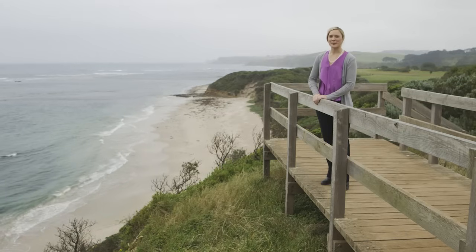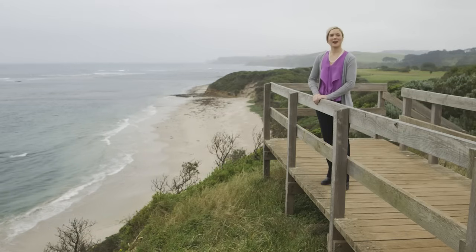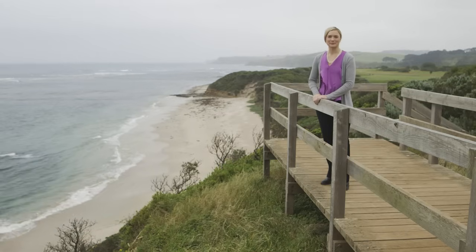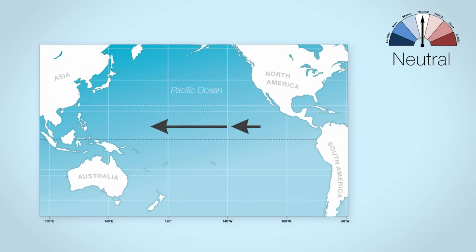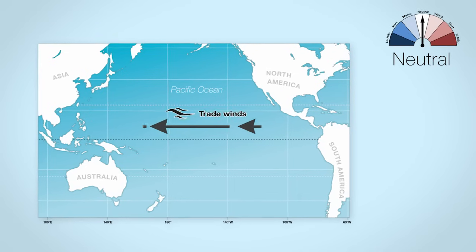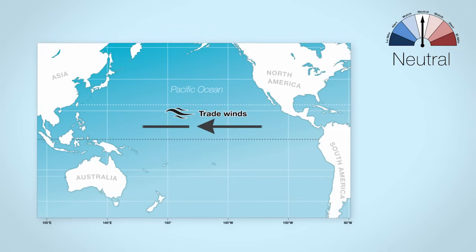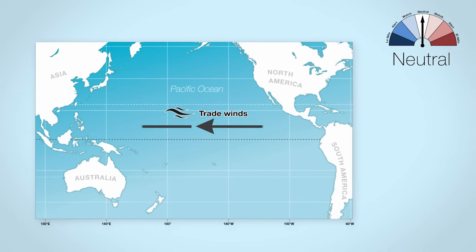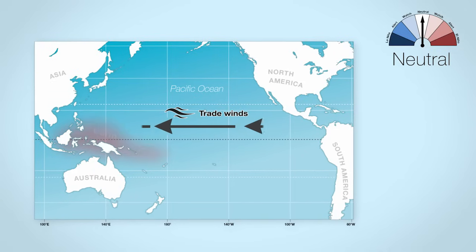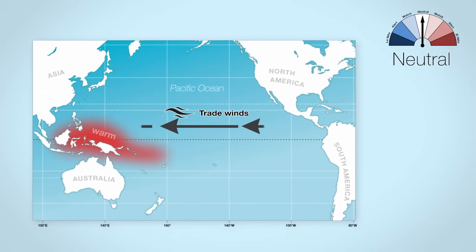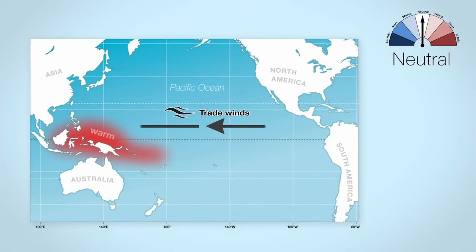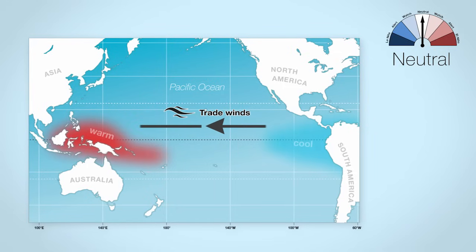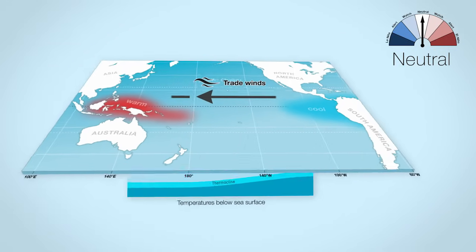So what are these ENSO phases and how do they impact Australia's climate? During the neutral phase, steady trade winds blow across the tropical Pacific from east to west. These winds pile up warm water in the western Pacific. In contrast, water temperatures to the east are lower as the trade winds cause cool water to be drawn up from the deep.